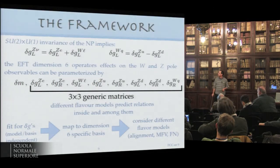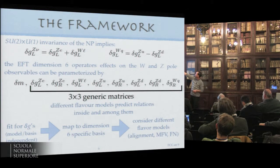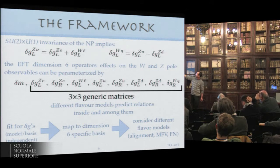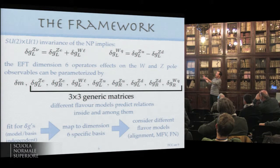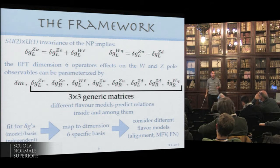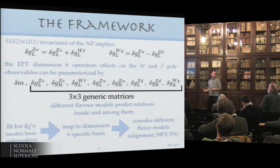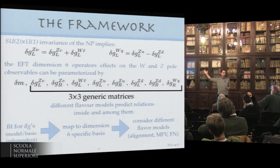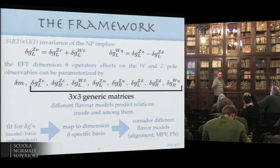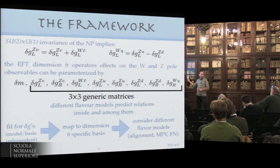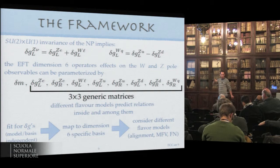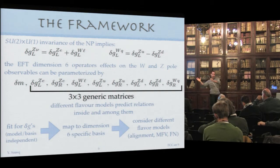The SU(2) cross U(1) electroweak invariance of the new physics implies a few relations between these coefficients, between the corrections to the W and the Z. All the dimension six operators can be parametrized into corrections to the W mass, and each one of these delta G's is in principle a three-by-three matrix. We don't assume any flavor structure on this.